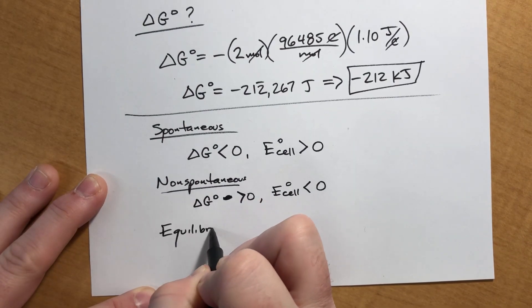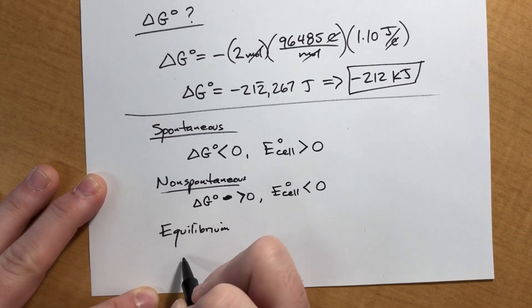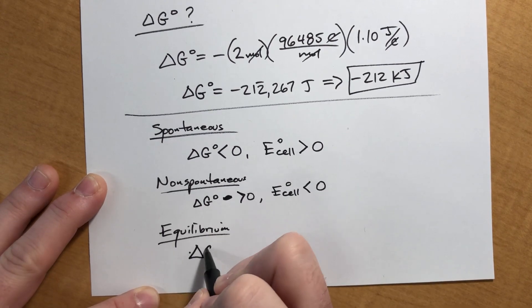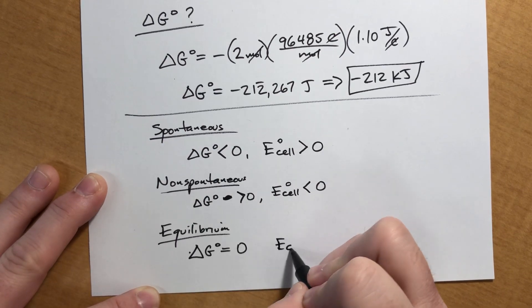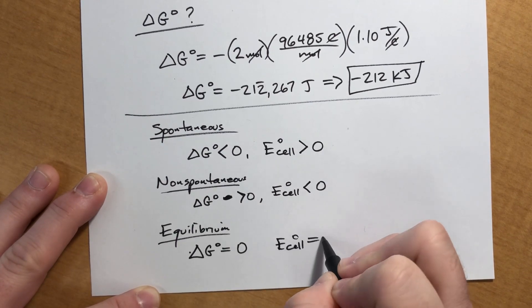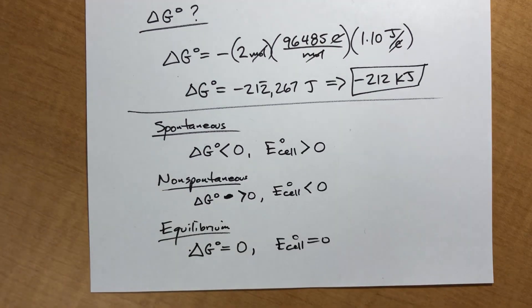And if you're at equilibrium, delta G at standard conditions was zero and E sub cell will also be zero, which honestly means your battery is dead.